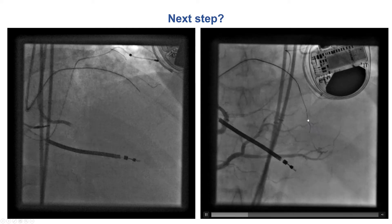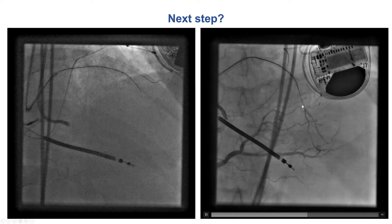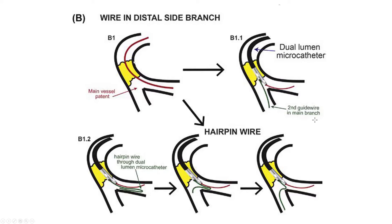So what should the next step be? Basically, the best way to handle this is when there is a wire going to the side branch but not in the main vessel, to advance a dual-lumen microcatheter and then use the over-the-wire lumen to advance a second wire into the distal main vessel.